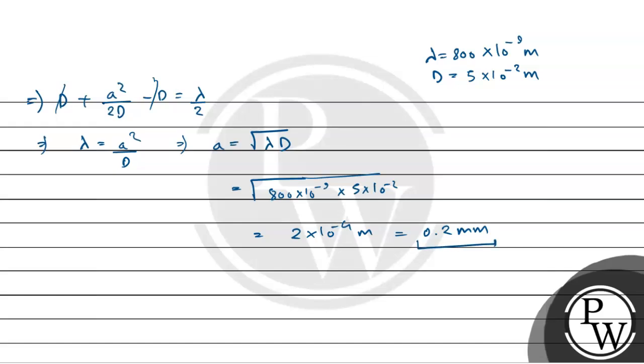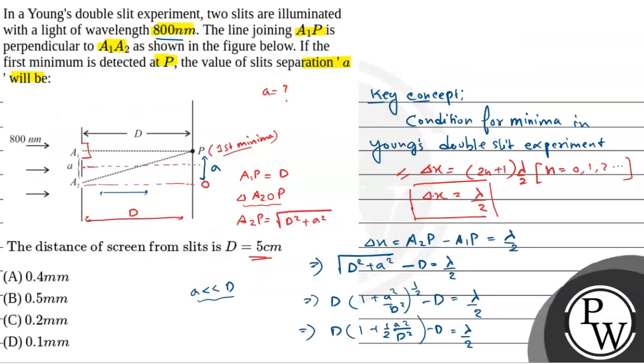So hamara jo slit separation hoga that is a is equals to 0.2 millimeter. And this is our final answer. So our option C is correct, that is the slit separation a is 0.2 millimeter right? Hope you understand it, best of luck.